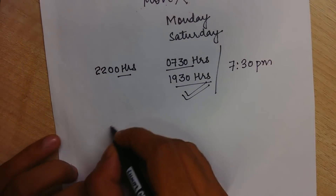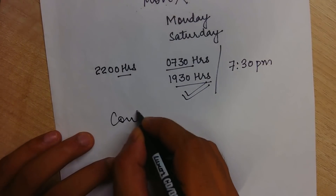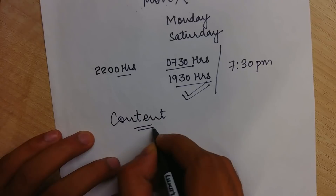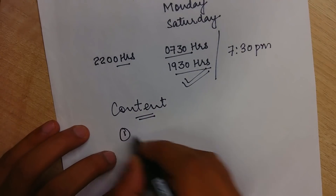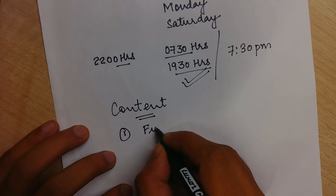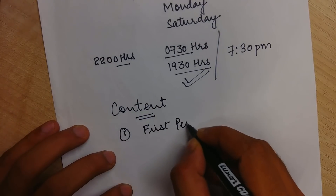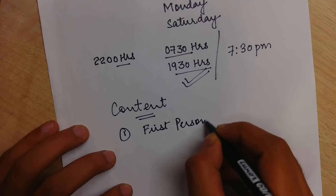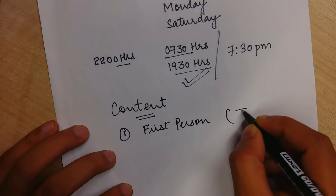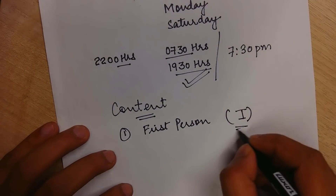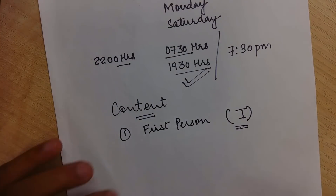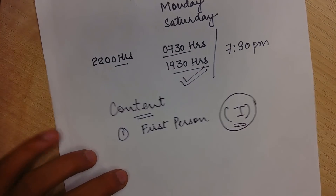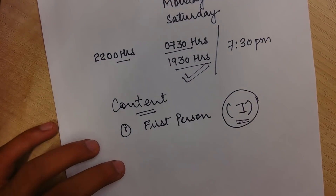Now I will tell you how to write the content. You have to write in first person because you are writing a diary, so you use the word 'I'. First person means the 'I' word — for example, 'I woke up early.' You always have to start with an 'I' sentence.